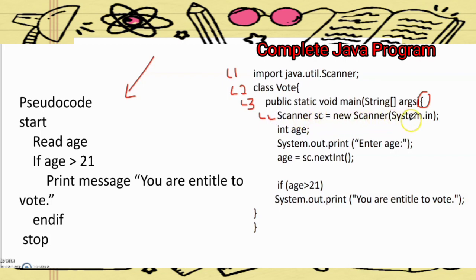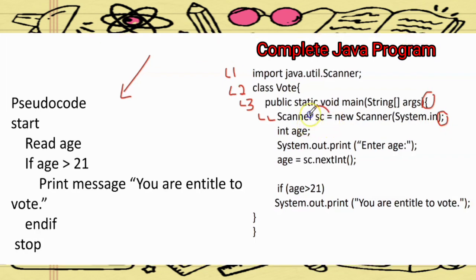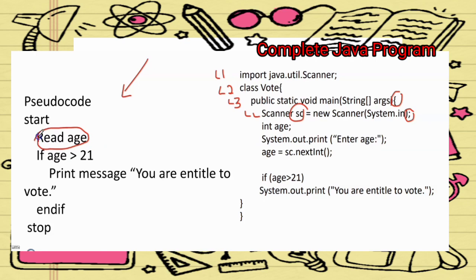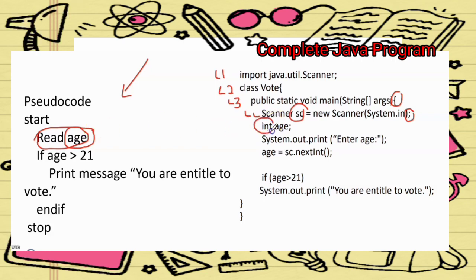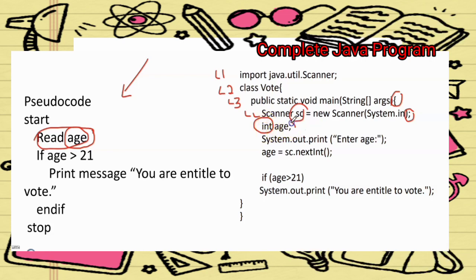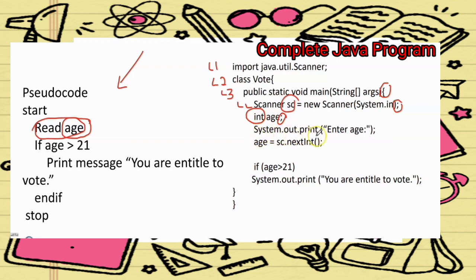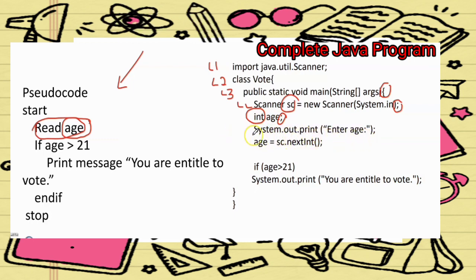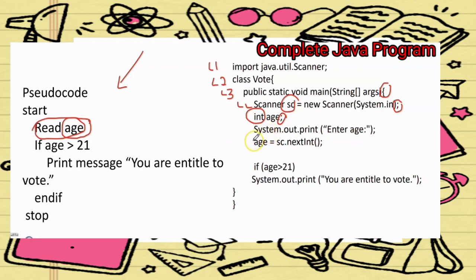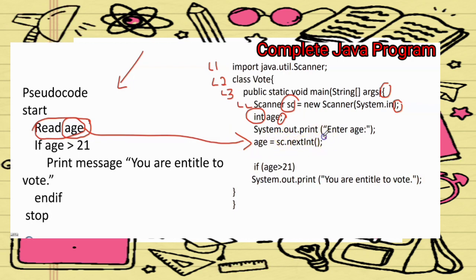Scanner sc equal to new Scanner(System.in), ending with a semicolon — this creates an object sc of the Scanner class. For read age, age becomes a variable. Before you write age, make sure you write the data type — you can use integer: int age;. Then System.out.print("Enter age:") for user friendliness. Next, the input statement: age = sc.nextInt(), ending with a semicolon.